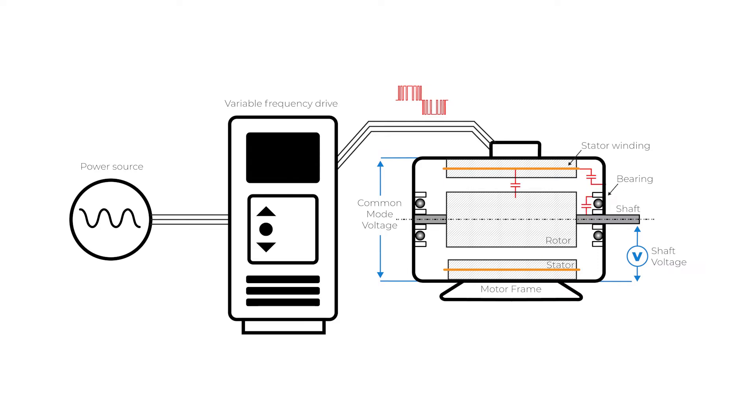Shaft voltage causes arcing through the bearing lubricant which results in pitting on the bearings and fluting on the bearing races.